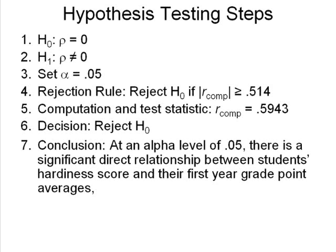So that's the first two of the three steps we need for our conclusion: we start with an alpha level, then we say what we found, and next comes the statistical string. The statistical string always starts with telling what kind of statistic we calculated — we calculated an R. And then for R's, we have to say what our degrees of freedom are. Our degrees of freedom were 13, because we had 15 pairs of scores minus 2, which gave us 13.